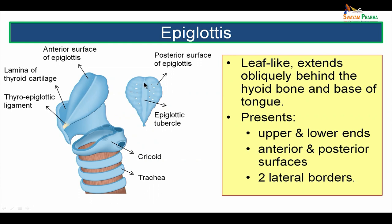The posterior surface of epiglottis has the epiglottic tubercle on a raised ridge in the midline. Epiglottis has an upper end, lower end, two lateral borders which are related to the aryepiglottic folds, and two surfaces — an anterior surface and a posterior surface.